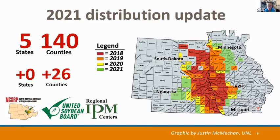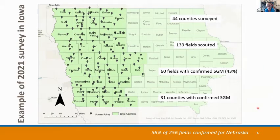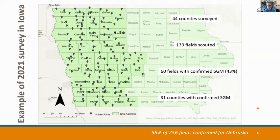Looking at a closer snapshot of Iowa: we sampled 44 counties, and approximately 60 fields — about 43% — had soybean gall midge at some level. We sampled at least three fields per county, starting in the west and moving east until we couldn't find them anymore. Nebraska did something very similar and has been doing this for a long time — approximately 56% of the fields they sampled had some level of midges last year.